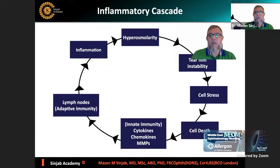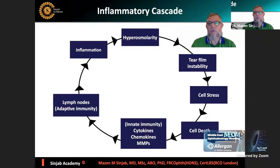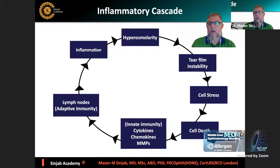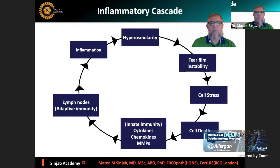This is the inflammatory cascade seen in ocular surface disease in general, which starts with hyperosmolarity, especially in dry eye disease, then tear film instability causing cell stress and cell death. Then the inflammatory process is initiated in two modes: the innate immunity involving cytokines, chemokines, and MMPs, and adaptive immunity where lymph nodes are involved - causing inflammation again and again. The inflammation causes epithelial disease, corneal barrier disruption, neural sensitization, and loss of goblet cells.